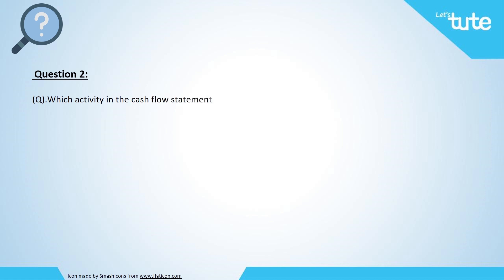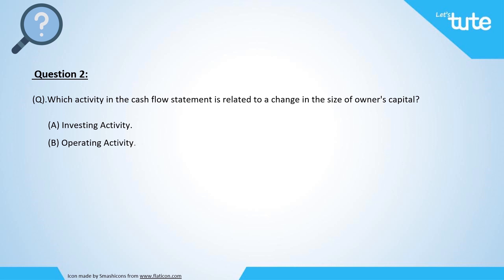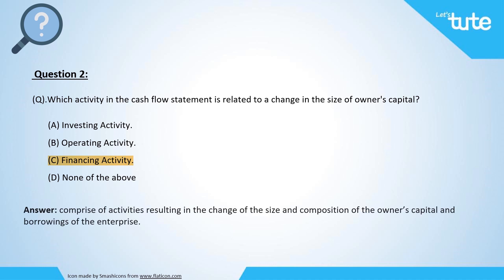Question two: Which activity in the cash flow statement is related to a change in the size of owner's capital? Option A: investing activity, Option B: operating activity, Option C: financing activity, or Option D: none of the above. The answer is Option C — financing activity. Financing activities comprise of activities resulting in the change of the size and composition of the owner's capital and borrowings of the enterprise.